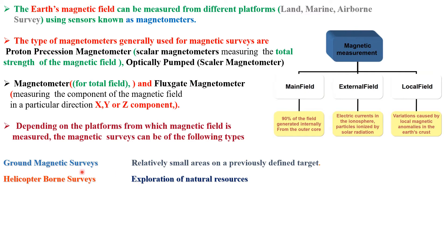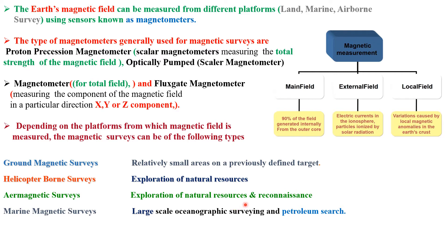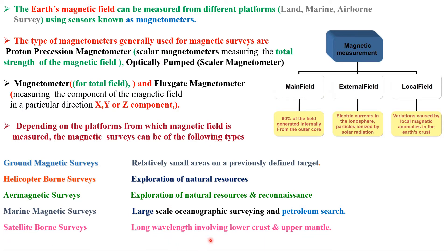Depending on the platform, magnetic surveys come in different types. Ground magnetic survey is used when targeting a smaller area for a particular mineralization. Airborne geophysics is more suitable for covering big areas, and there is also a heliborne survey for exploring natural resources. Aeromagnetic survey is used for large-scale reconnaissance, and marine magnetic survey is a large-scale oceanographic survey used in petroleum search. Marine survey involves measurement of long wavelengths coming from the lower crust and upper mantle — it's a deep, large-scale survey.